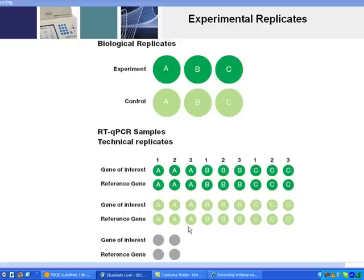On every plate, you always have to make sure that you run no template controls for each gene you're running. For each amplicon on any plate, you should always run at least two no template controls for each primer pair. For a gene of interest with a reference gene, that's a total of 40 samples — so for the simplest of experiments, you're using up almost half a 96-well plate. It's easy to see how, as you add more genes or conditions, you can easily end up with multiple plates for a single experiment.